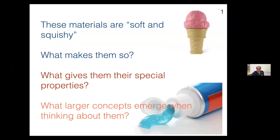One thing about these materials — the suspension, the fluid, the ice cream and toothpaste — is that these materials are thought of as being soft and squishy. We can ask what makes them soft and squishy, as opposed to hard and undeformable with any reasonable amount of force. What gives them these special properties? Are there new concepts, new ways of thinking about materials of this type that we have to develop?